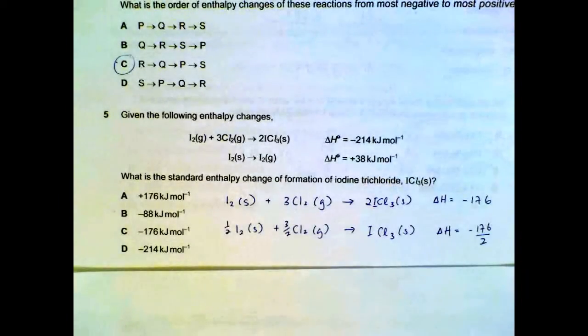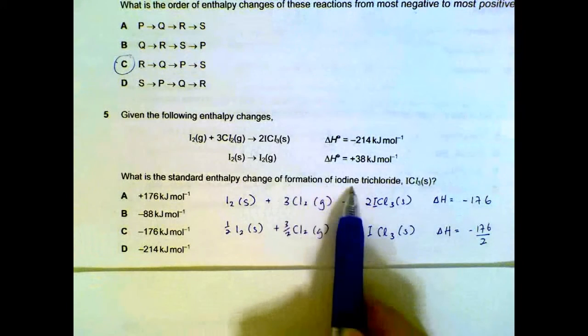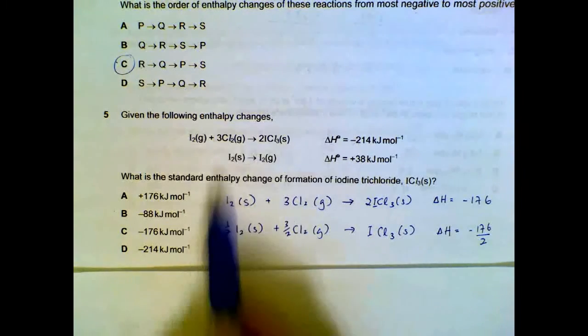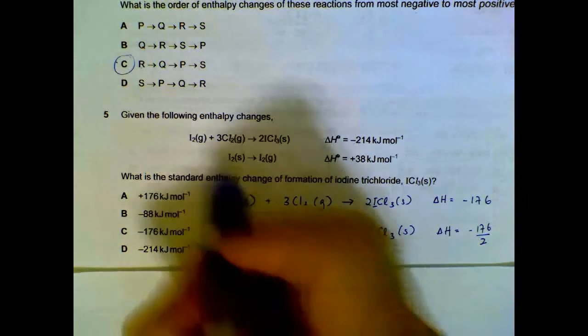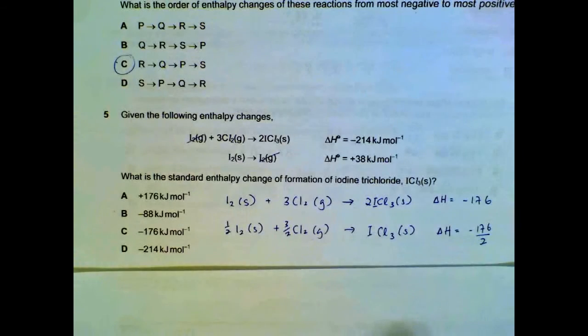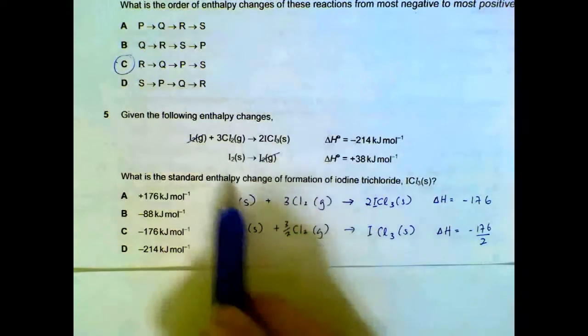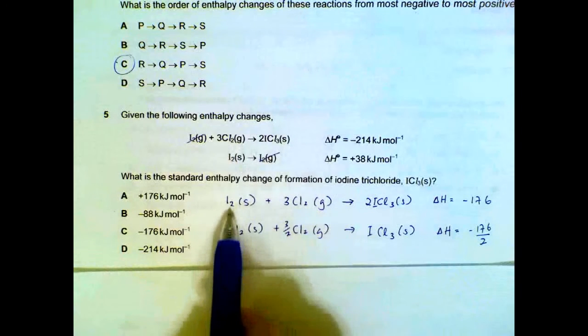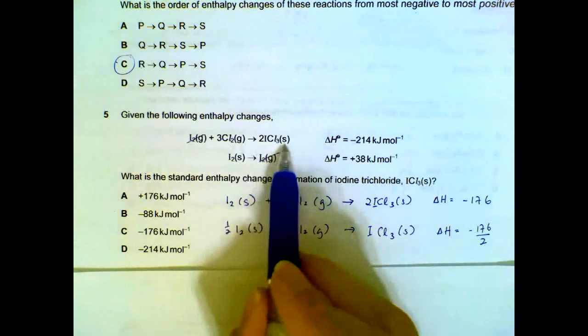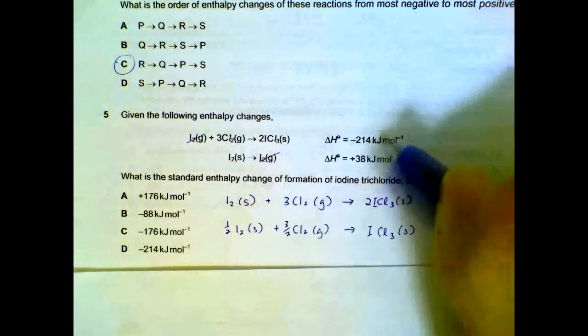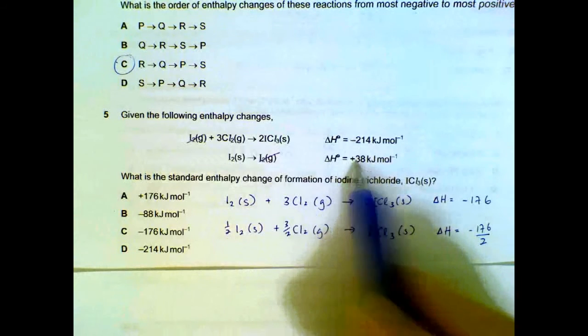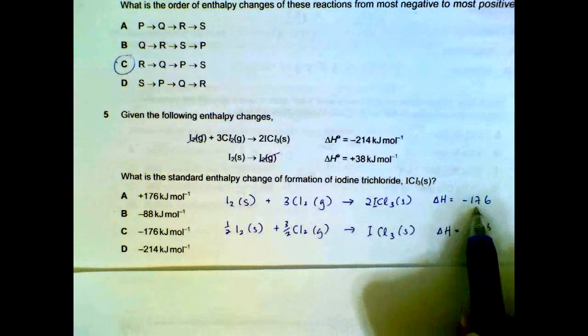Number five. What is the standard enthalpy change of formation of iodine trichloride? Now, we have these two equations. We can combine them first. And when we combine, we can actually cancel out those that appear on the left and the right side. And when we do that, we actually have I2 plus 3Cl2 gives us 2ICl3 solid. And when we combine them, we will just take this number, negative 214 plus 38. That's why we have minus 176 here.